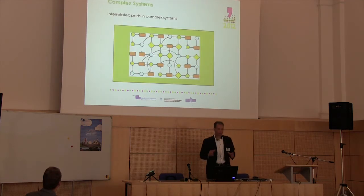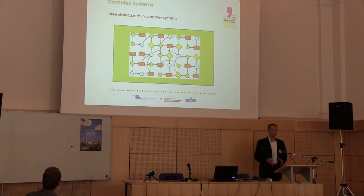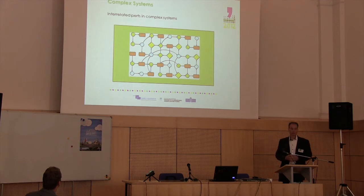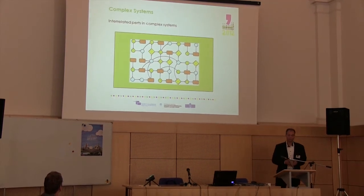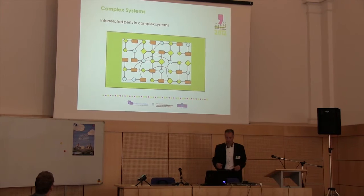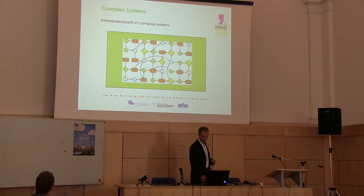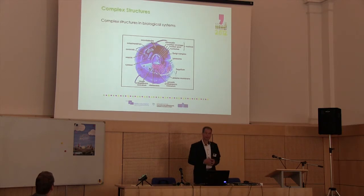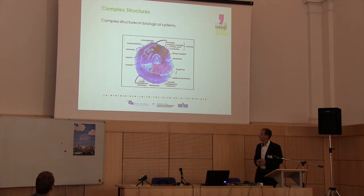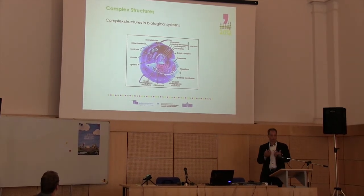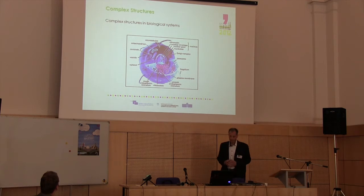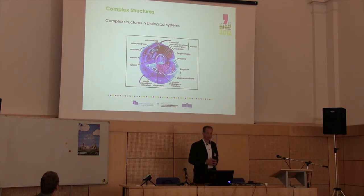Before we start with this general introduction, I would just like to make a note on complex systems in general. When we talk about complex systems, we think about systems with many parts, with many links and relationships between those parts. For example, cells in biological systems — you can see how many particles, how many parts of the system we have, and how many processes are going on in such a cell. You can imagine how many processes are important for our life, for our functioning. The cell is just one example of such systems.